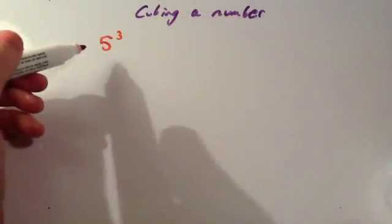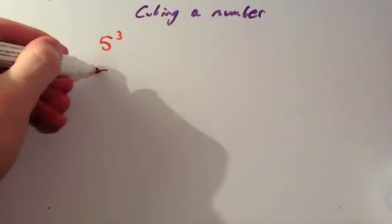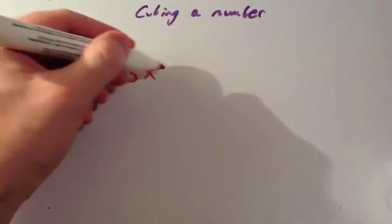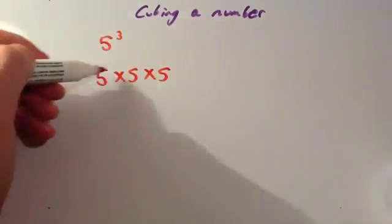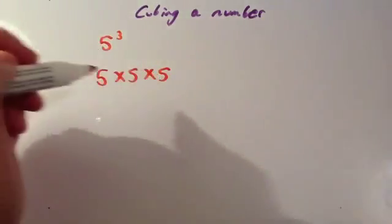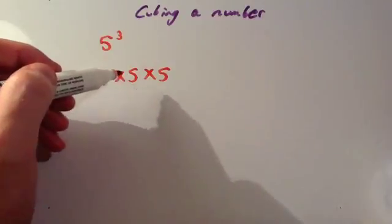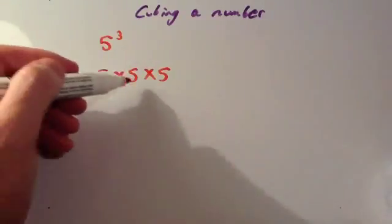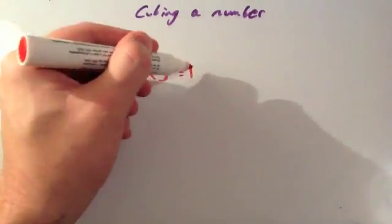To cube a number, you multiply it by itself and by itself again. So to do 5 cubed, I would do 5 multiplied by 5 multiplied by 5. Notice the 3 and you've got 1, 2, 3 fives. So you do 5 times 5, get that answer, and times it by 5. So 5 times 5 is 25 and times that by 5 is 125.